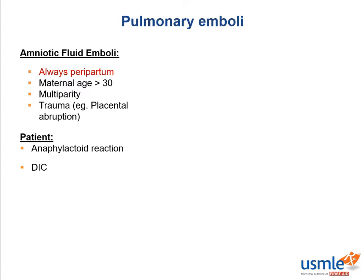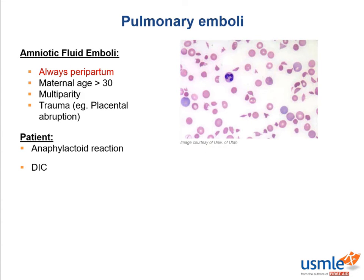DIC is widespread activation of the clotting cascade, causing the body to use up all of its available clotting factors. This presents as thrombosis first, and then once all the factors have been consumed, the patient begins bleeding. The classic tip-off on board questions is an oozing IV site. The peripheral blood smear in DIC shows schistocytes and helmet cells.